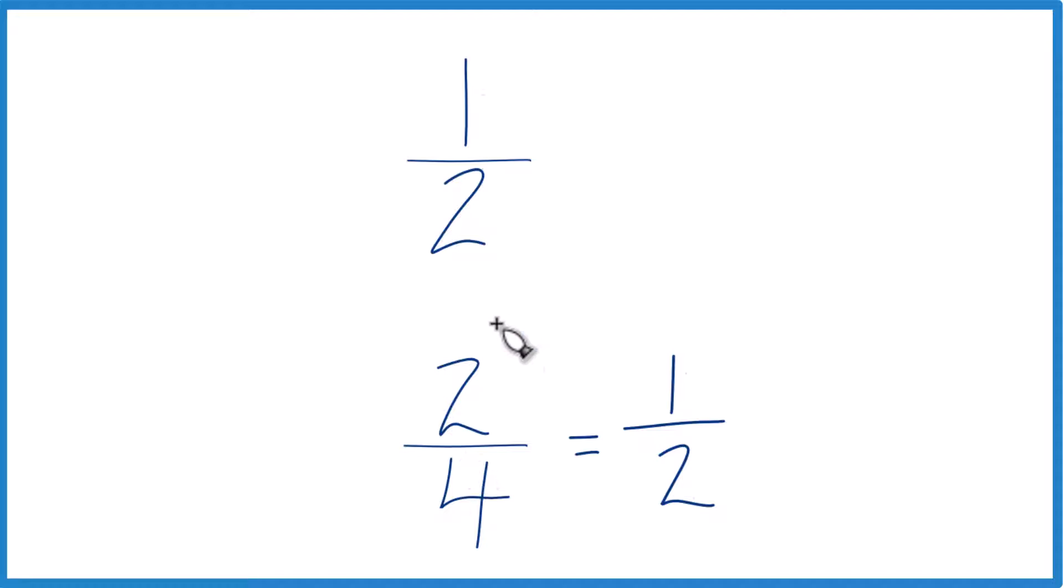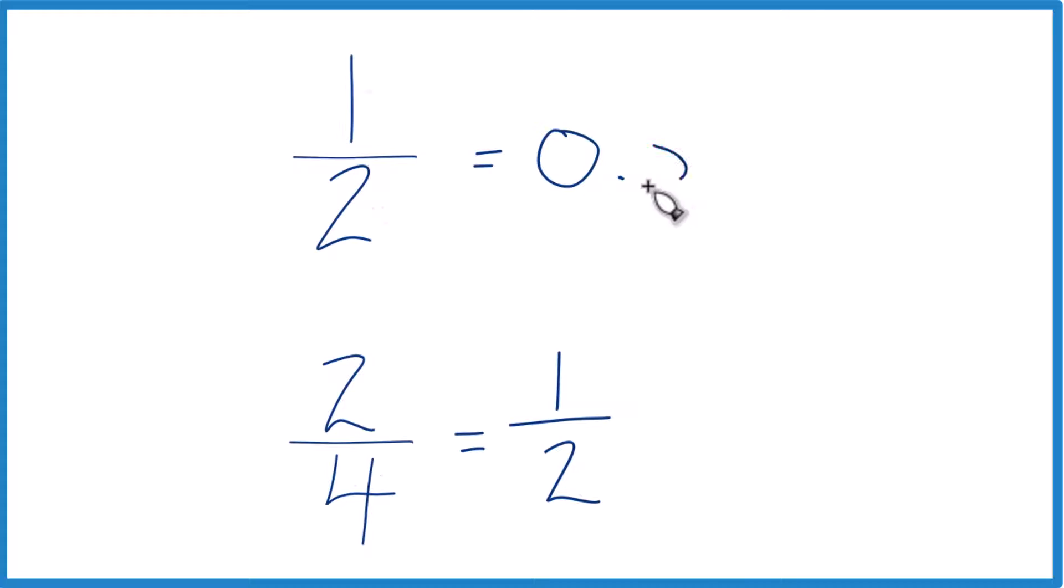You could also do this on a calculator. Divide one by two, you'll get 0.5. And then divide two by four, or one by two again, you get 0.5. So we have the same decimal. So that's another way to do it.